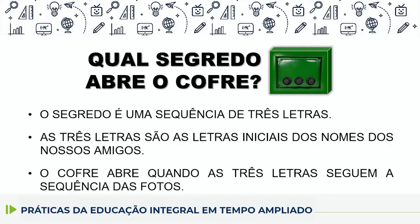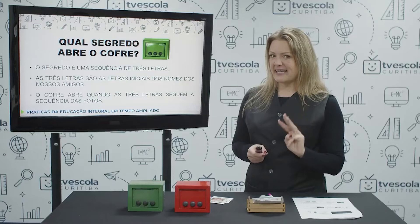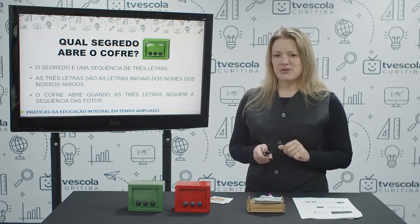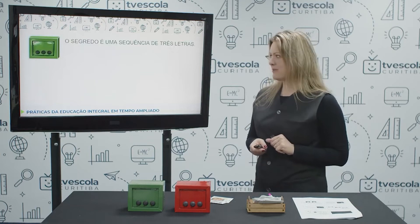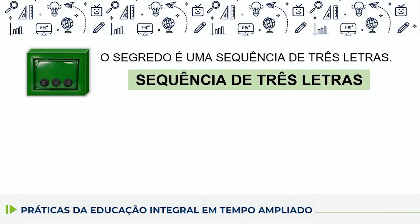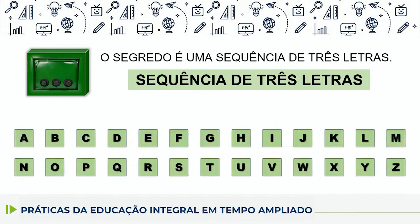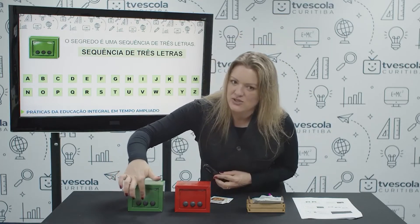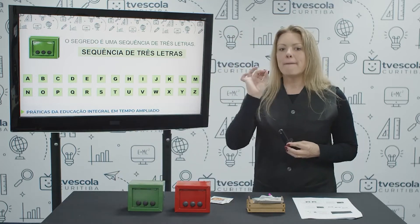A terceira pista diz que o cofre abre quando as três letras seguem a sequência das fotos. Vamos analisar as três informações uma a uma e seguir um algoritmo que vai definir o segredo que abre o cofre. A primeira pista diz: o segredo é uma sequência de três letras. Nós temos aqui todo o alfabeto e três letras irão compor uma sequência — o segredo que colocaremos no cofre verde para abri-lo.